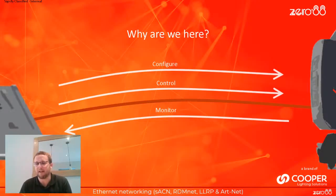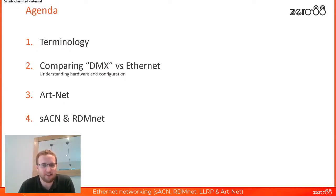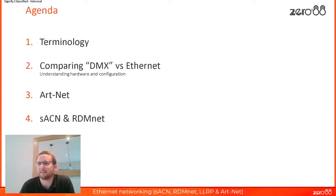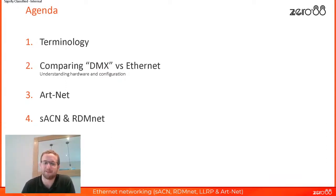We're going to follow this agenda: look at some terminology first, then compare DMX versus Ethernet and understand the differences and similarities, then look at Art-Net in more detail, and then look at Streaming ACN and RDMnet in more detail. Please feel free to ask any questions you might have.